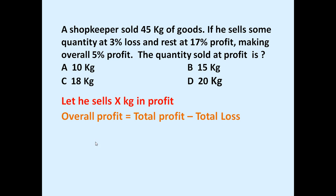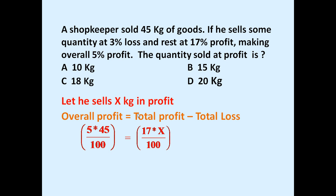Using this formula: overall profit is 5%, total quantity sold is 45 kg, so 5% of 45 equals the profit from x kg at 17% minus the loss. That gives us: (5 × 45) / 100 = (17 × x) / 100. This is the profit at the rate of 17%.